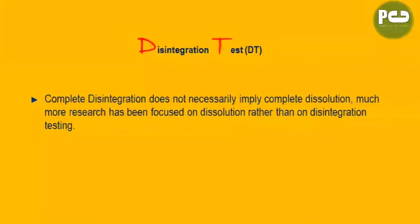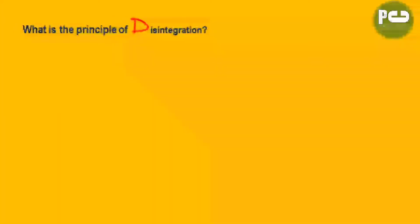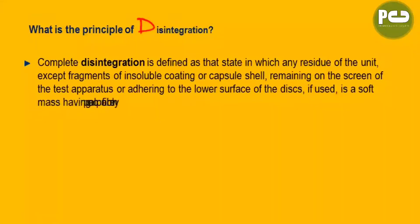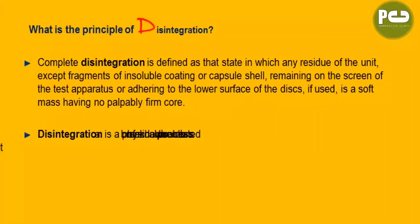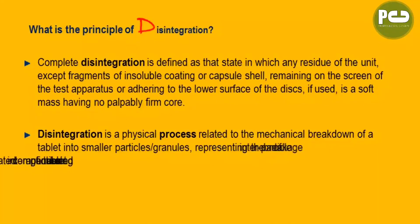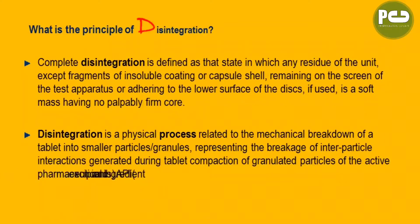Complete disintegration does not necessarily imply complete dissolution. Much more research has been focused on dissolution rather than on disintegration testing. Complete disintegration is defined as the state in which any residue of the unit, except fragments of insoluble coating or capsule shell remaining on the screen of the test apparatus, are adhering to the lower surface of the disc, if used, in soft mass having no pliable film core.